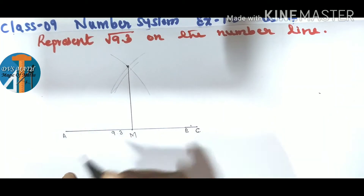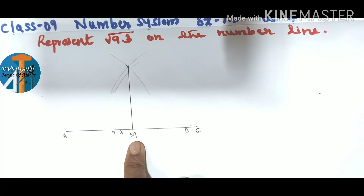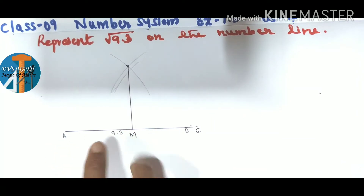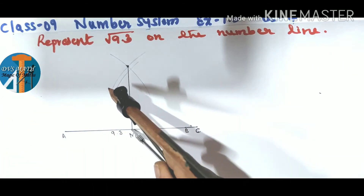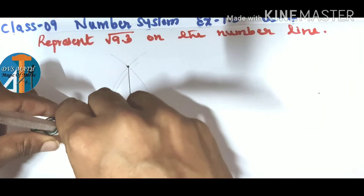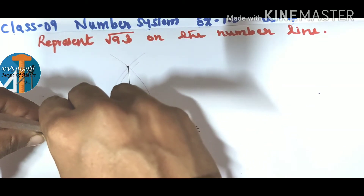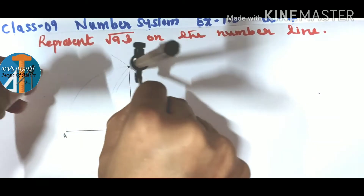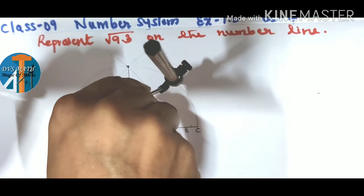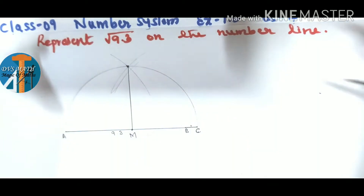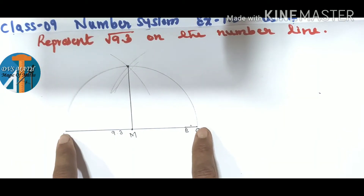Consider this midpoint as M. Now take M as center and AM as radius, and draw a semicircle — draw it on the top, not at the bottom. So we now have one semicircle drawn above the line AC.